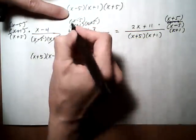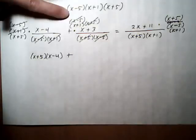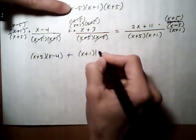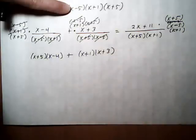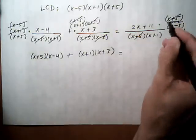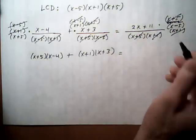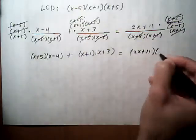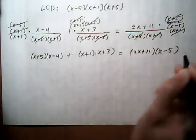or no, x minus 5 cancels out. x plus 1 stays. So then we have x plus 1, x plus 3 equals. And the last one we get the x plus 5 canceling out and the x plus 1 canceling out. And we're left with 2x plus 11 times x minus 5.